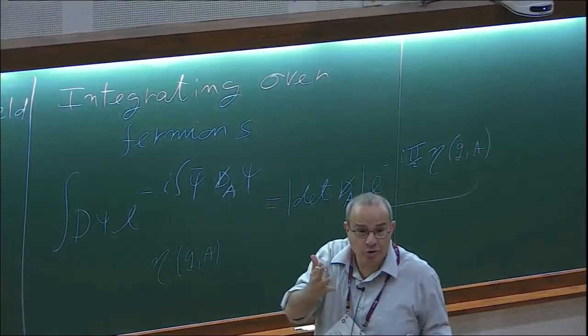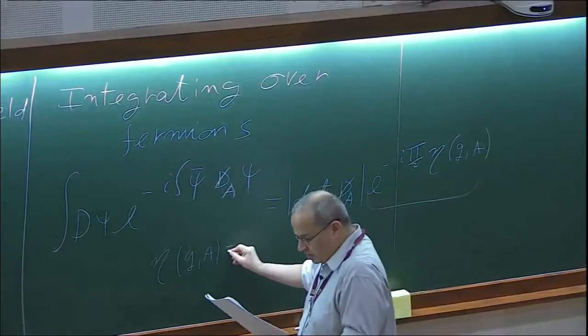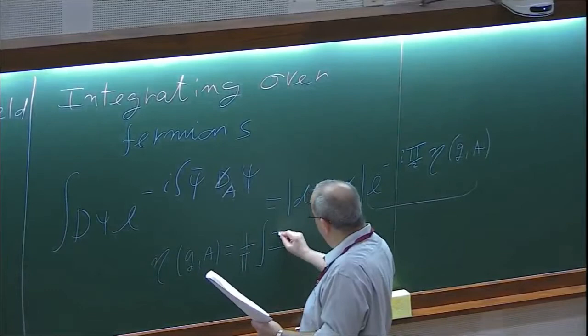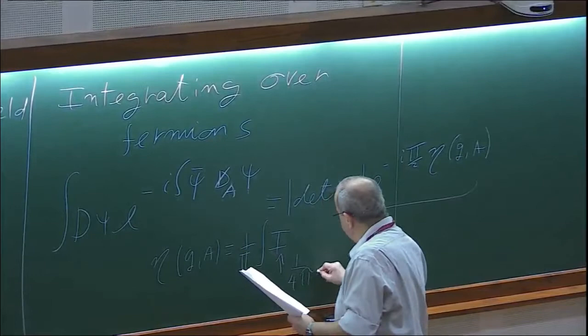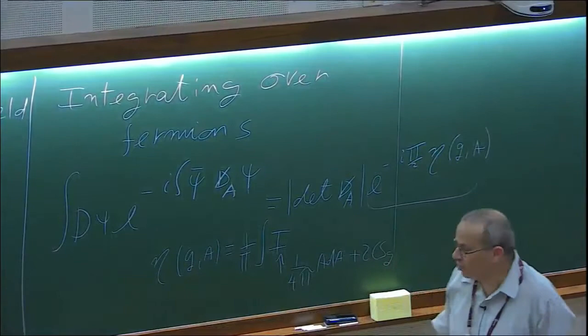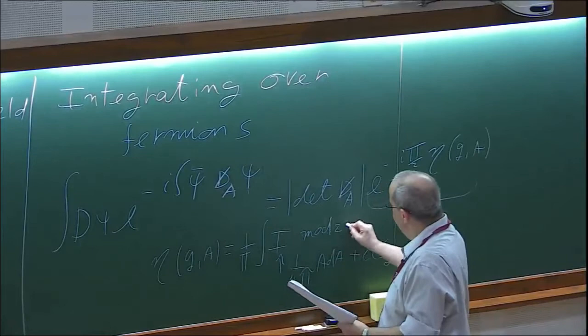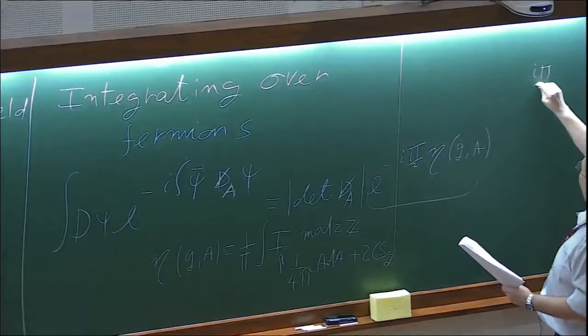I have to define eta. This eta is 1 over π times the integral of the thing we called I before — this linear combination of ADA and the gravitational Chern-Simons term. Recall this is 1 over 4π ADA plus twice the gravitational Chern-Simons term, and that's modulo Z. So if we put all the factors, what we have in the exponent is π over 2 eta, and eta is this quantity mod 2π.